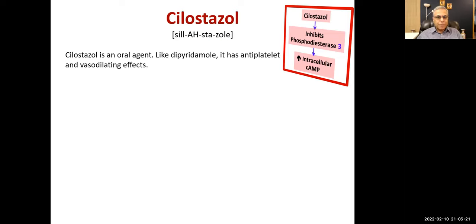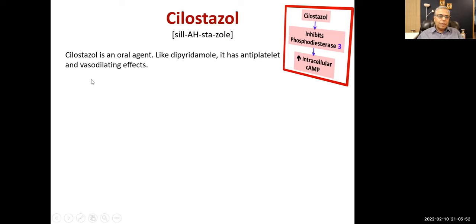In the heart we have phosphodiesterase III, which is inhibited by aminophylline and methylxanthines. Performance-enhancing drugs like sildenafil, tadalafil, and related drugs inhibit phosphodiesterase V. Cilostazol is an inhibitor of phosphodiesterase III.